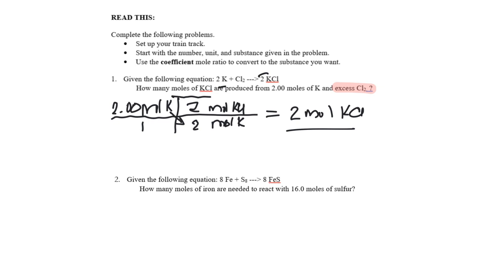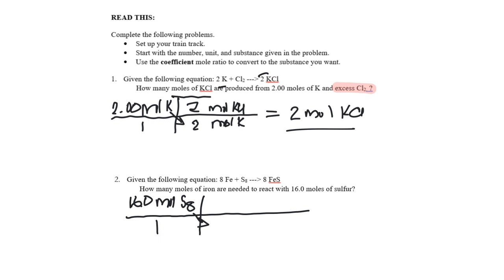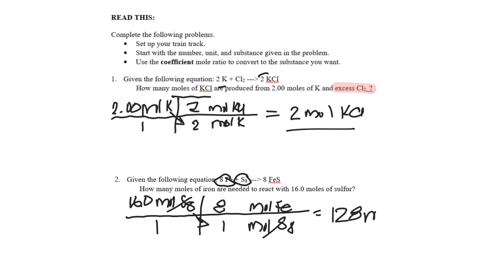Question two: we have iron reacting with sulfur to produce iron sulfide. We want to know how many moles of iron will react with 16 moles of sulfur. It's one step — just use the ratio from the balanced chemical equation. Start with 16 moles of S8 over one. Moles of S8 comes down; moles of Fe goes to the top. There's an eight next to iron and a one next to S8, so 16 times eight gives us 128 moles of Fe.